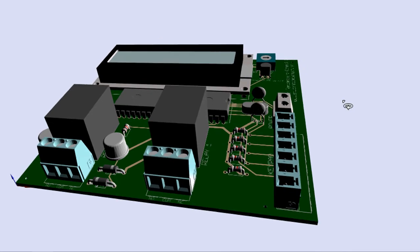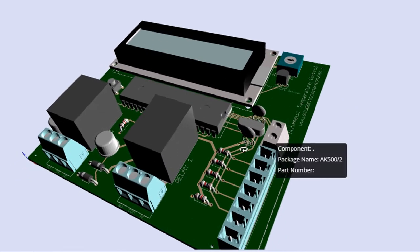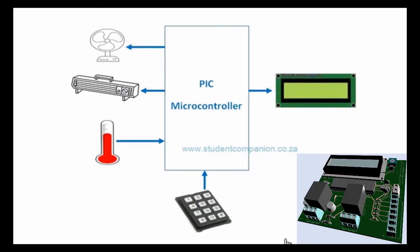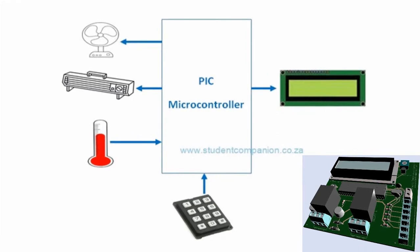In this tutorial, we're going to design an automatic temperature control system. An automatic temperature control system has the ability to monitor and control the temperature of a specified space without human intervention. This project uses a PIC microcontroller to automatically control the temperature of a specified area. This area could be a small plant, a house, or any place or device that requires a controlled temperature, like a chicken incubator, for example.